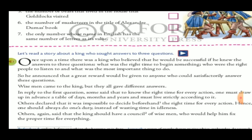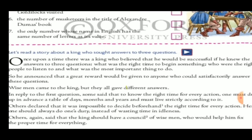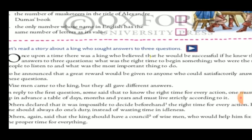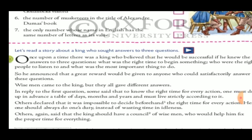The first question — what is the right time to start something? The second — who is the most important person to listen to when everyone is talking? The third — which is the most important thing to do among many actions? These three questions were bothering him, so he announced that a great reward would be given to anyone who could satisfactorily answer them.